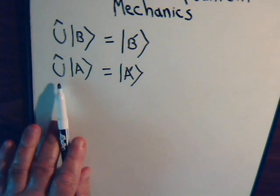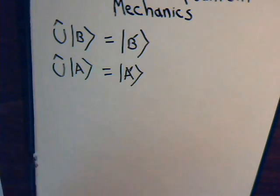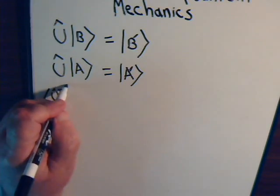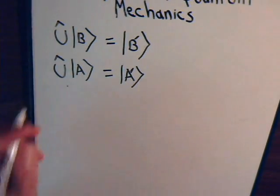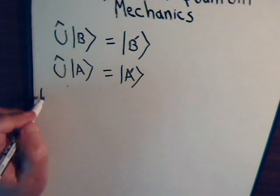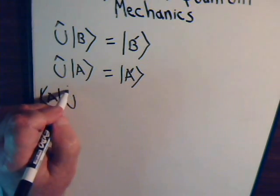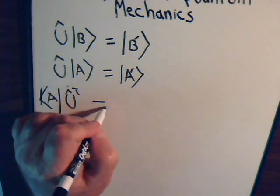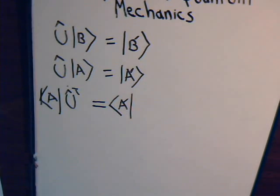If we use the adjoint of this linear operator, that would work on the bra vector A. What we're writing down here is the definition of the adjoint. So bra vector A being operated upon by the adjoint of the operator gives us bra vector A prime. This is just the definition of the adjoint of an operator, which we covered in video number six.